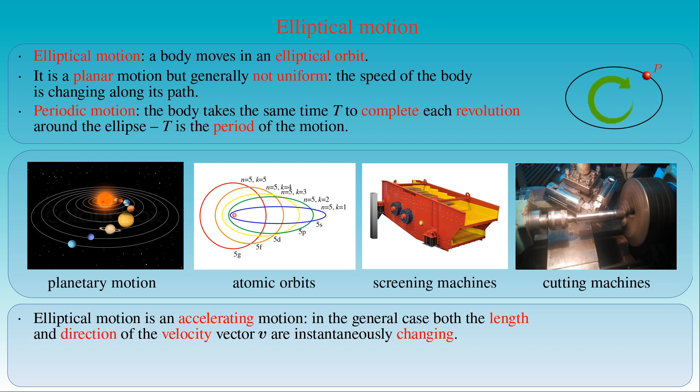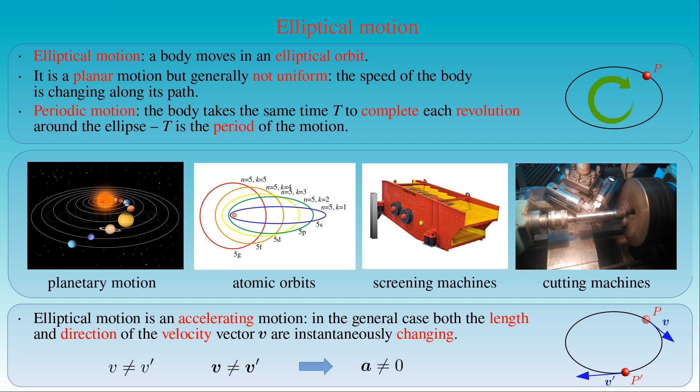In any two points P and P' of the path of the motion, the velocity vectors V and V' point in different directions and have different magnitudes. As a result, the acceleration of the body is non-zero throughout the whole elliptical orbit.